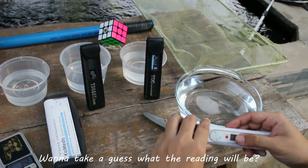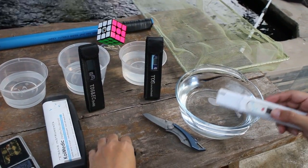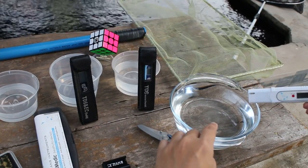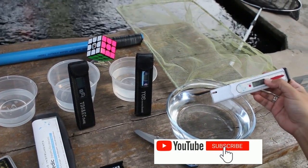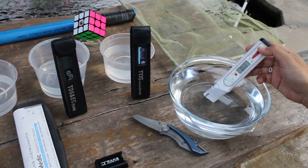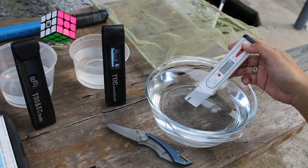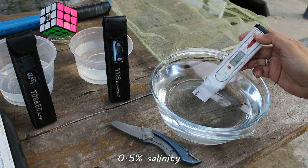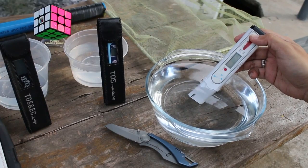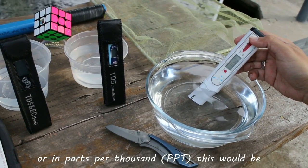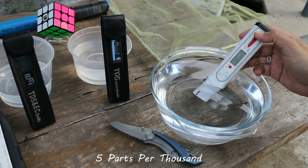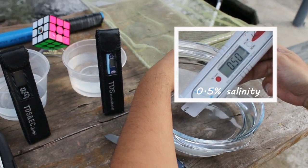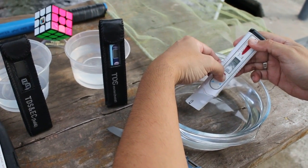Want to take a guess what the reading will be for five grams of salt mixed into one liter of water? Want to guess the reading? Anyhow, here's the reveal. 0.5% salinity, or in parts per thousand this would be five parts per thousand. Let me convert it to you in parts per thousand, hold on, I'm just going to press this. There, 5.0 parts per thousand.